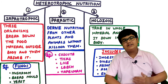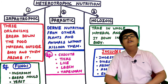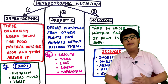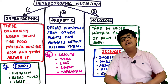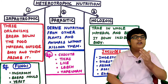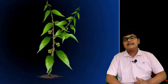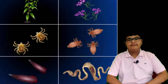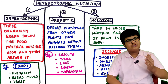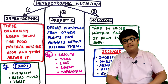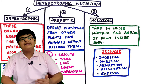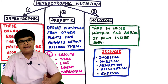Second is parasitic nutrition - these organisms derive nutrition from other plants and animals without killing them. For example, cuscuta, ticks, lice, leech, and tapeworm. Third is holozoic nutrition - these organisms take in whole food material and break it down inside their body.